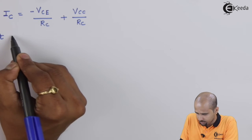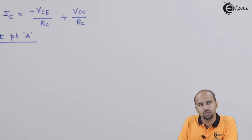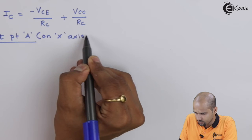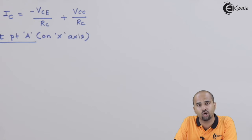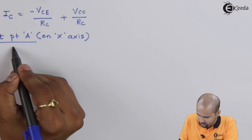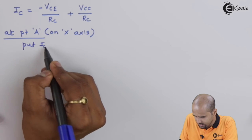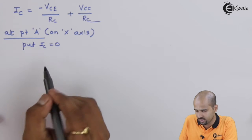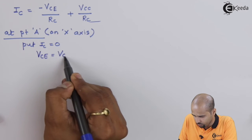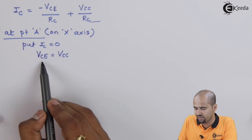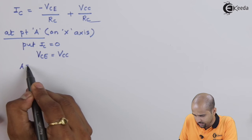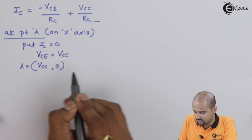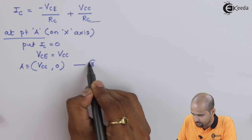We will find the exact position of the points on the x and y coordinates. The equation is: IC = −VCE/RC + VCC/RC. At point A on the x-axis, the y-coordinate should be zero. Setting IC = 0, we get VCE = VCC. So point A has coordinates (VCC, 0) on the x-axis. We name this equation number three — point 1.